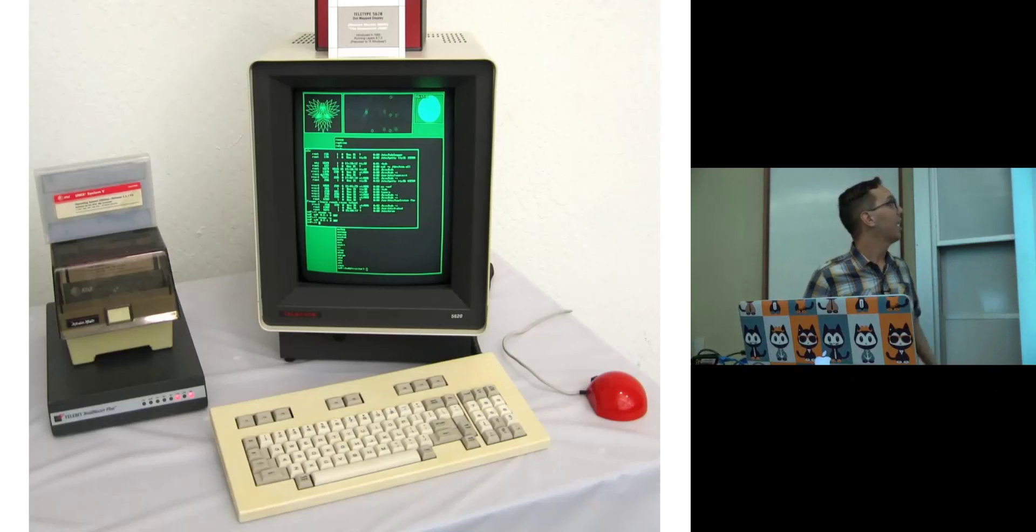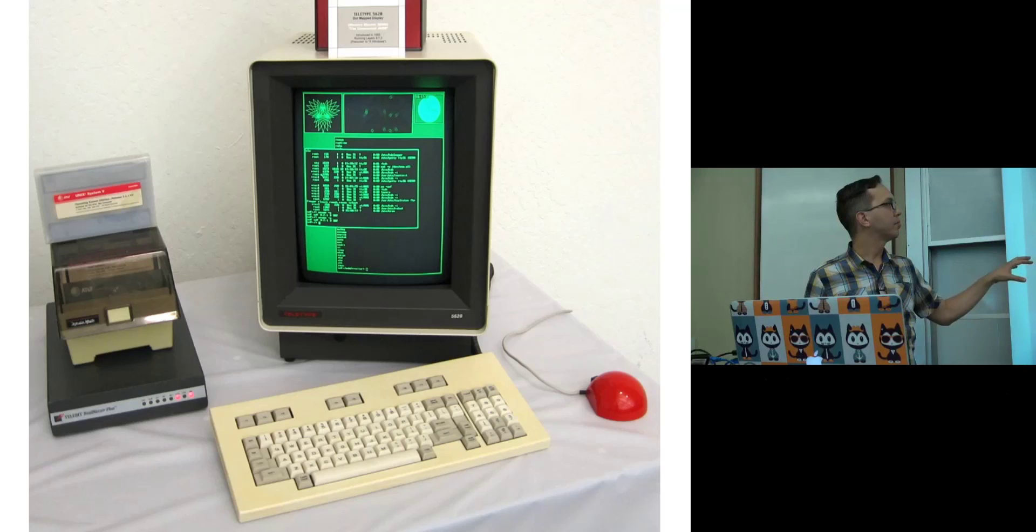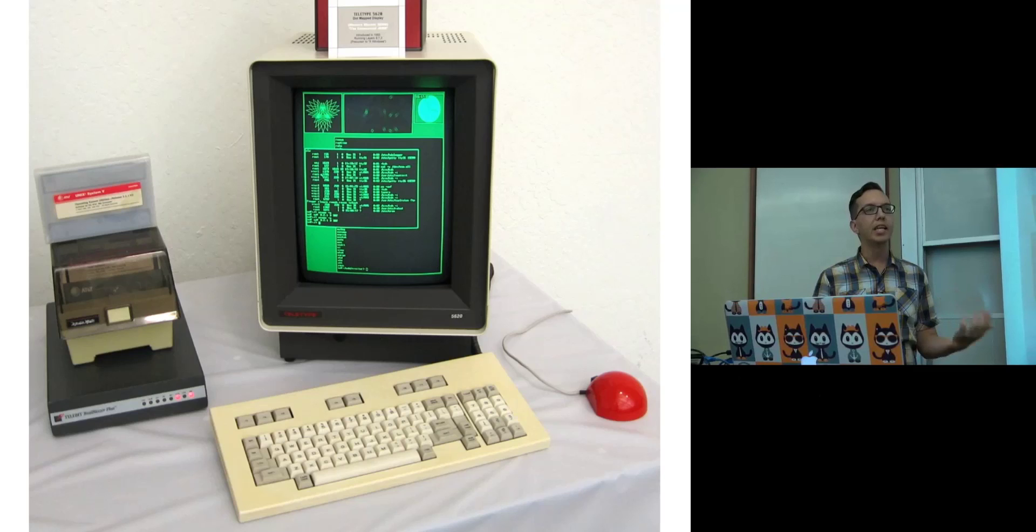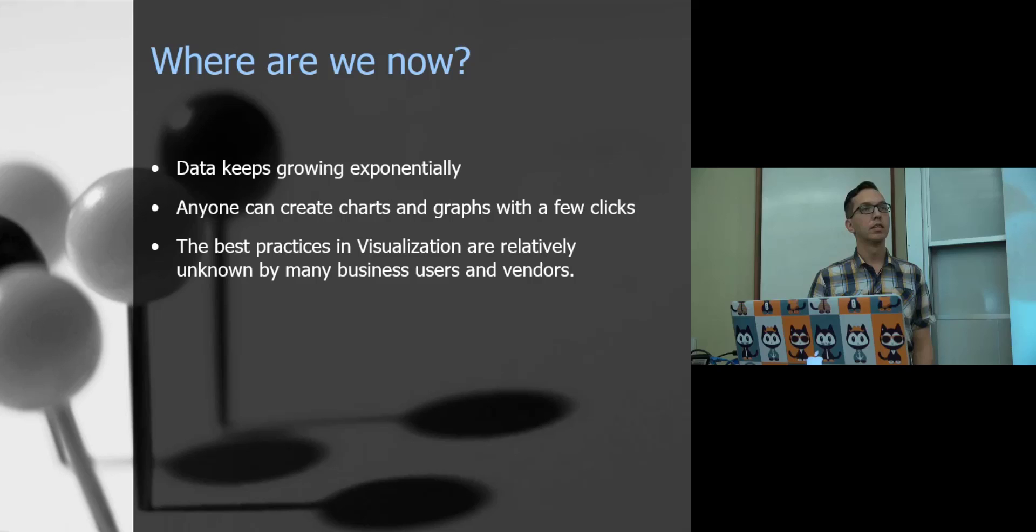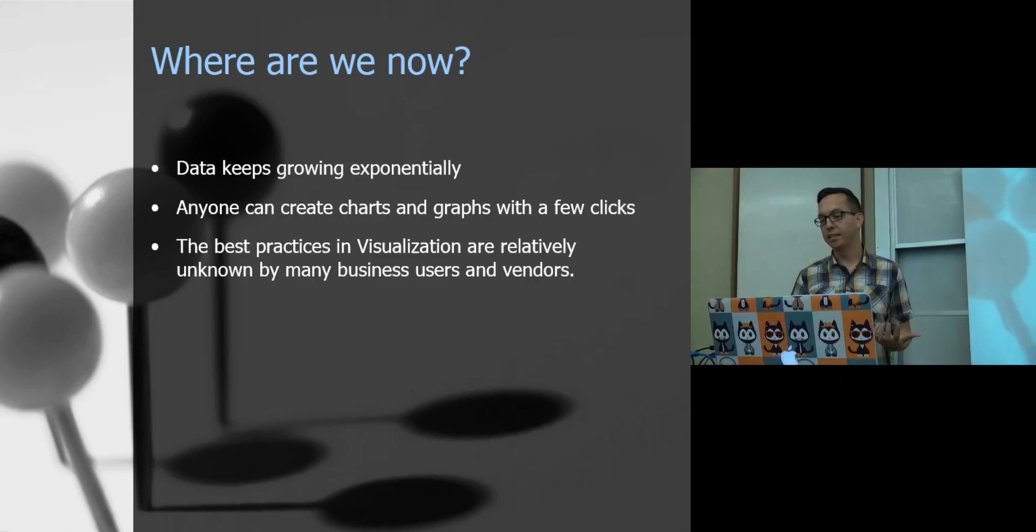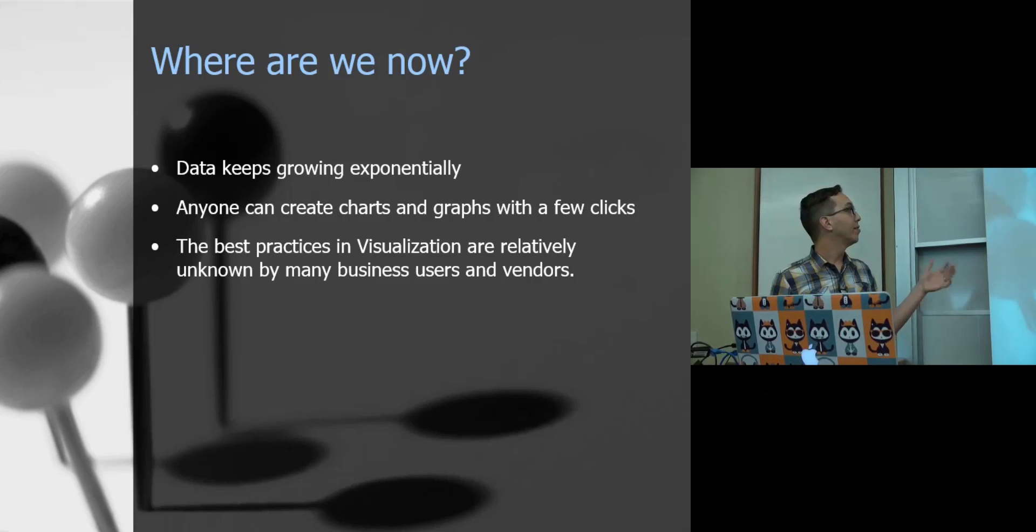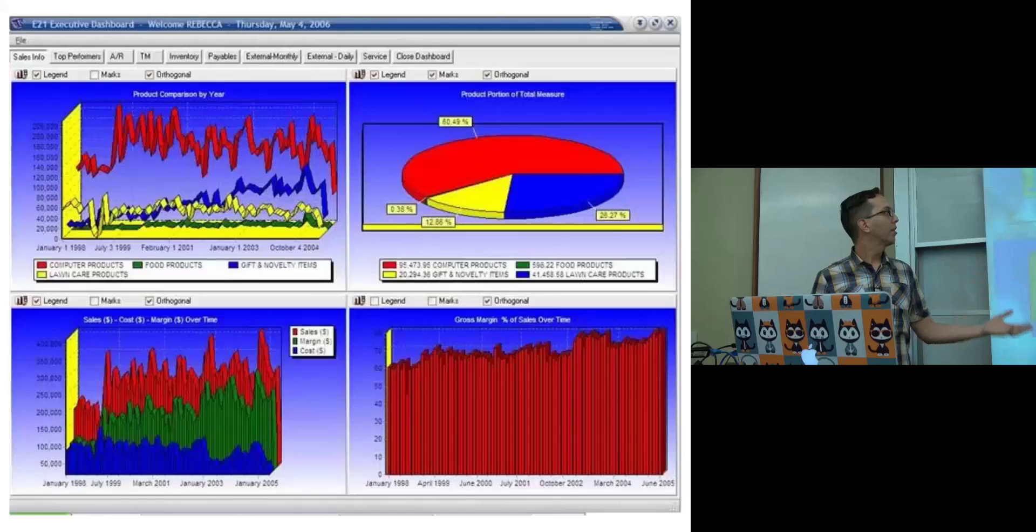So let's fast forward to the 1980s. This is when things really take off as far as charts and graphs because the personal computer comes home. And all of a sudden, we have these programs like Microsoft Excel. We've got spreadsheets. And we can create our own charts. And all of a sudden, something that only a statistician could do before anybody can do. So that takes us to where we are now. I don't have to tell anybody in this room that data keeps growing exponentially. You've probably seen those charts. They just keep going up. I've mentioned anyone, my kids can create charts and graphs with just a few clicks. But the best practices in visualization, they're not known. They're not known by most people. And frankly, by most vendors, really, that are giving folks the tools. So if they aren't known to people or the vendors, then they're generally hard to come up with. And so you end up with stuff like this.